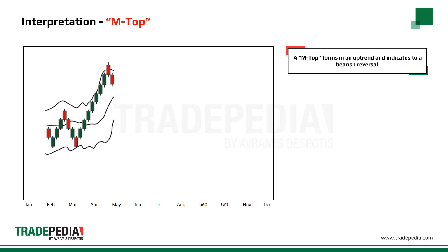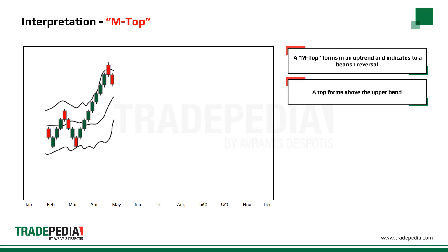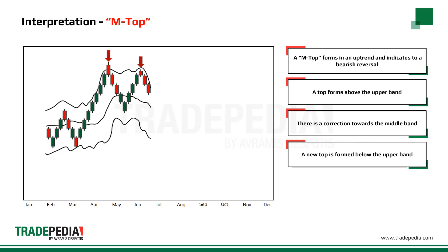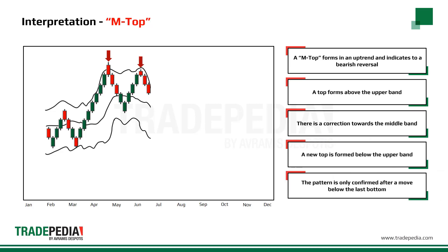The M top forms in an uptrend and indicates a bearish reversal. First, a top forms above the upper band. There is a correction towards the middle band, and then a new top is formed below the upper band. The pattern is only confirmed after a move below the last bottom.